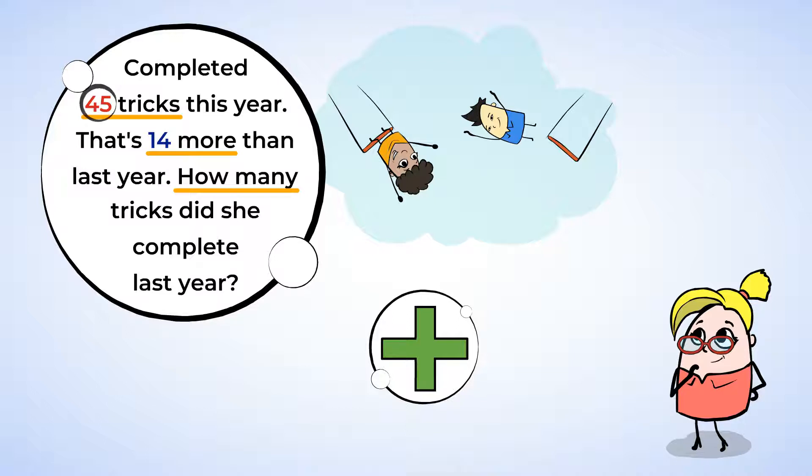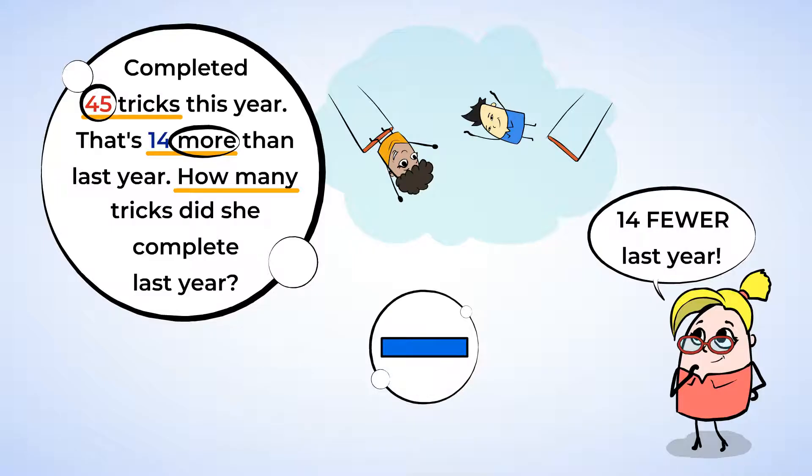But let's double check what exactly is going on in this problem. The trapeze artist completed 45 tricks, which is more than last year. So she actually completed 14 fewer tricks last year. And to find that number, we're actually going to need to subtract. Good thing we looked back at the problem. Now let's write down the equation.